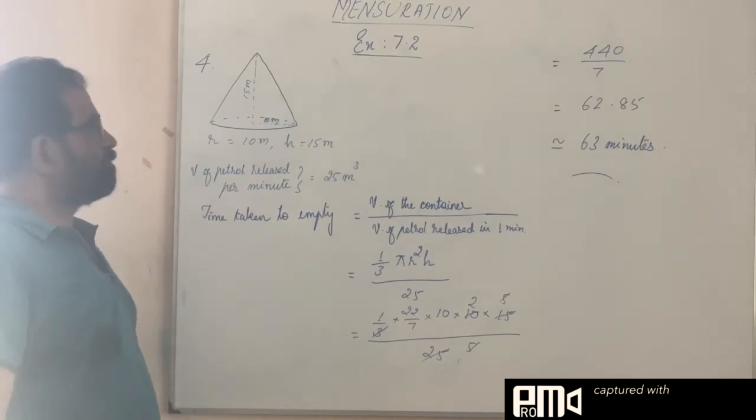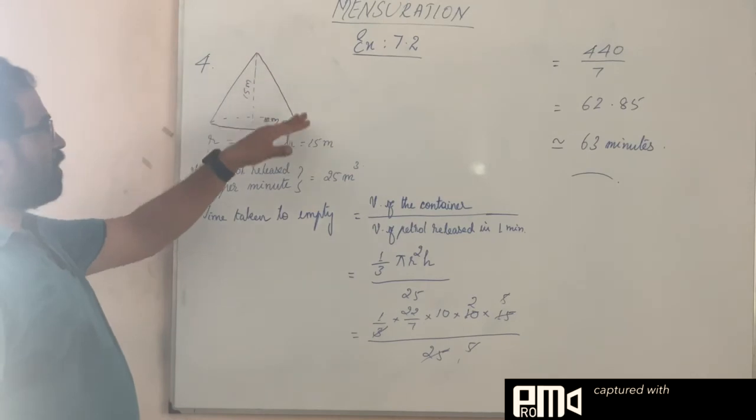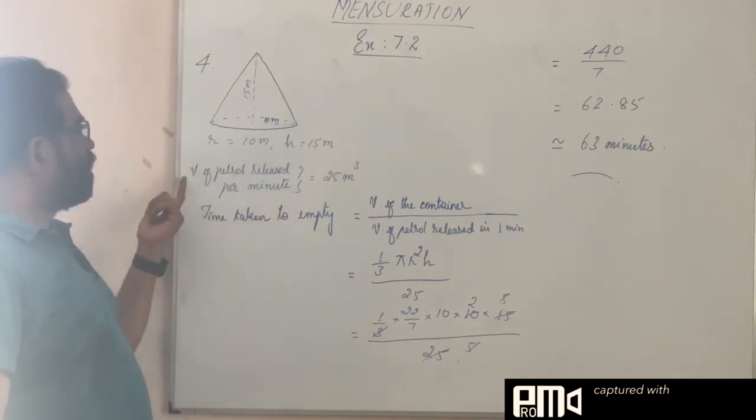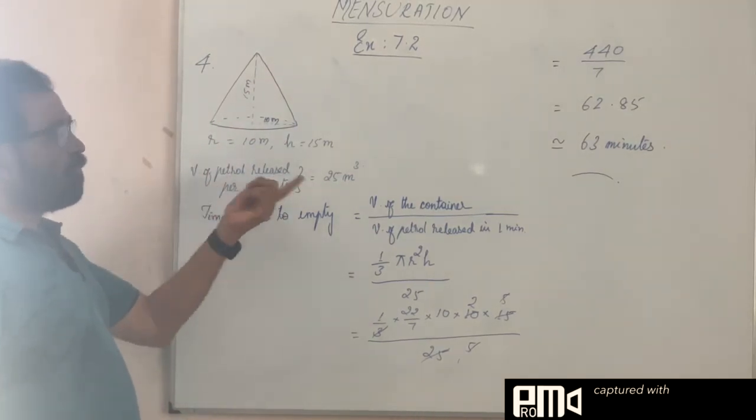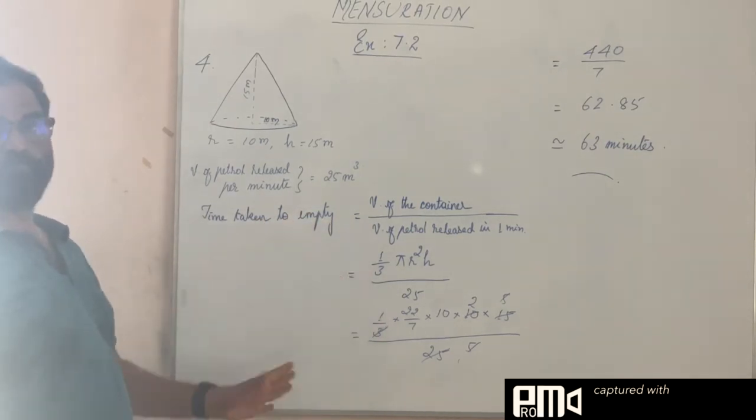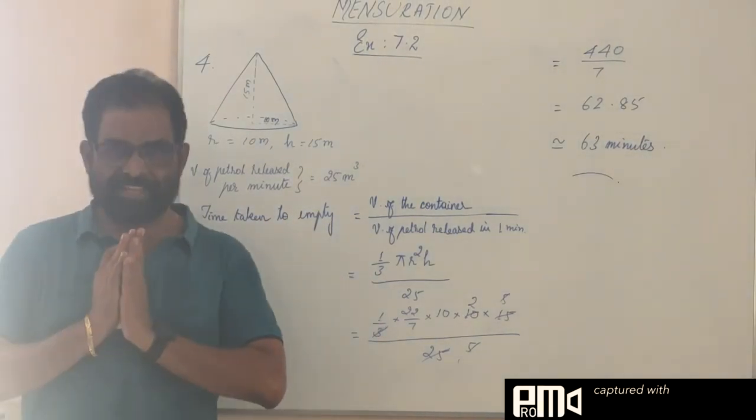So that's the simple formula you use: time taken to empty equals volume of the container divided by volume of petrol released or amount of petrol released in one minute. That's all, okay, thank you.